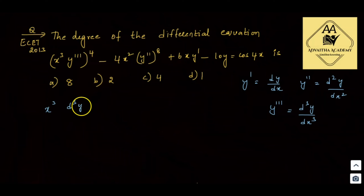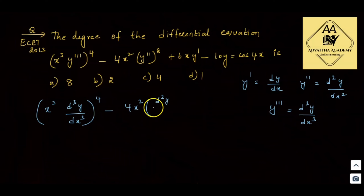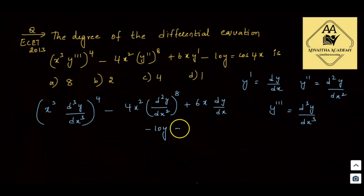Rewriting: x³ · (d³y/dx³)⁴ - 4x² · (d²y/dx²)⁸ + 6x · (dy/dx) - 10y = cos4x.